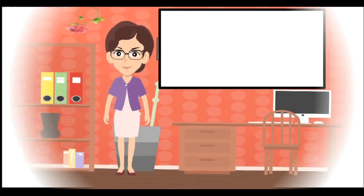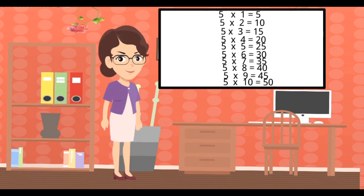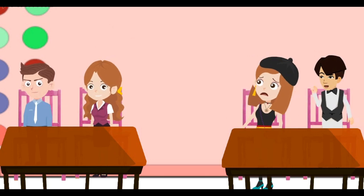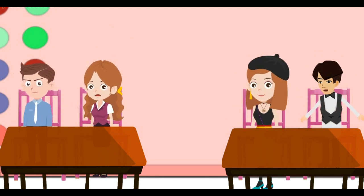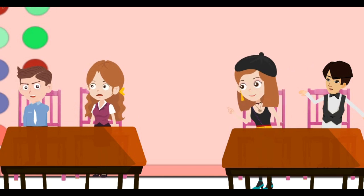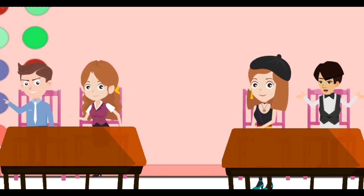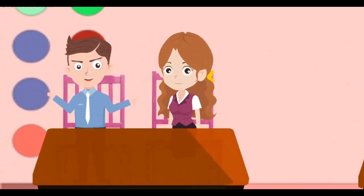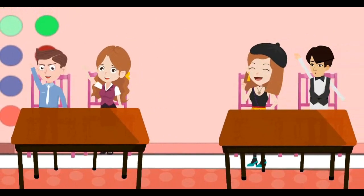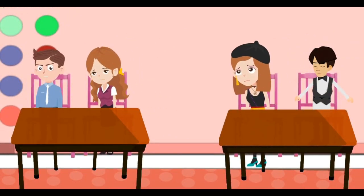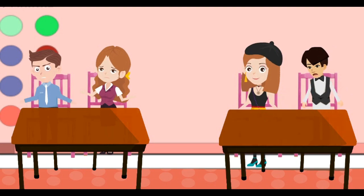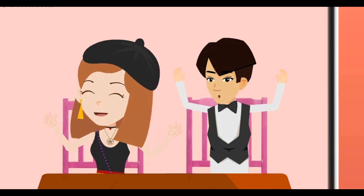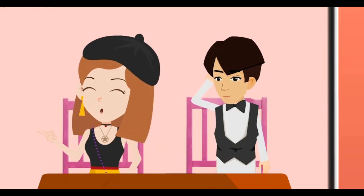Now children, repeat this. 5, 1's a 5. 5, 2's a 10. 5, 3's a 15. 5, 4's a 20. 5, 5's a 25. 5, 6's a 30. 5, 7's a 35. 5, 8's a 40. 5, 9's a 45. 5, 10's a 50.